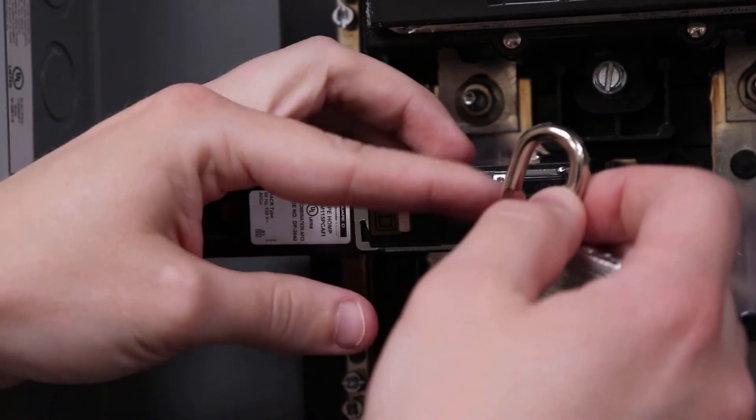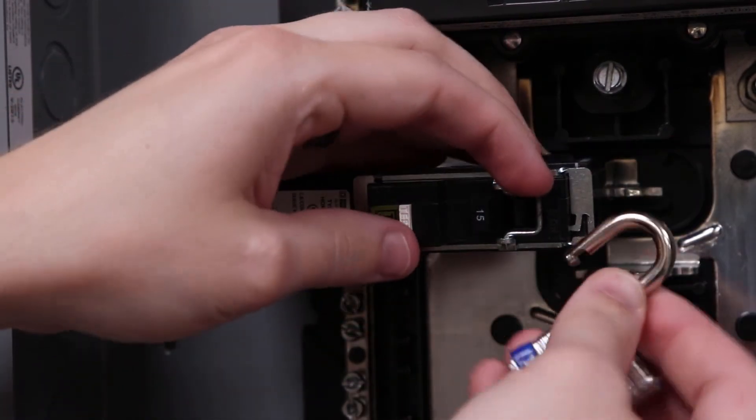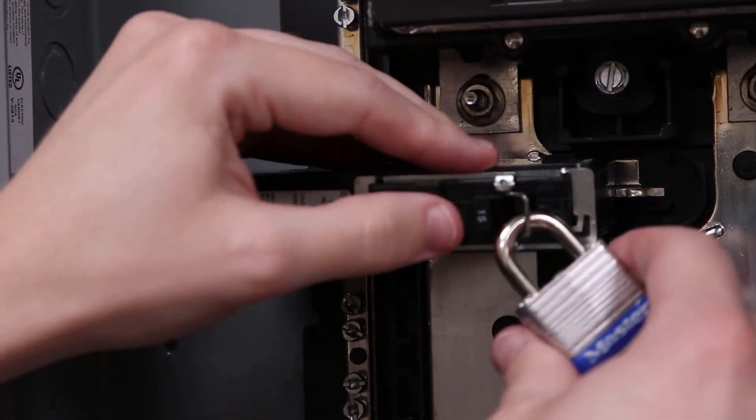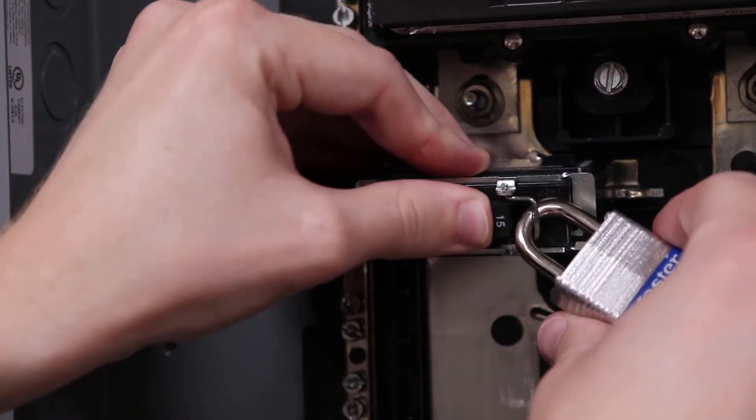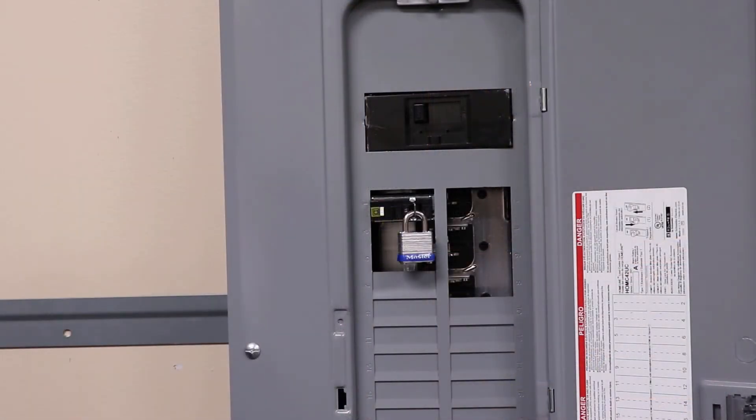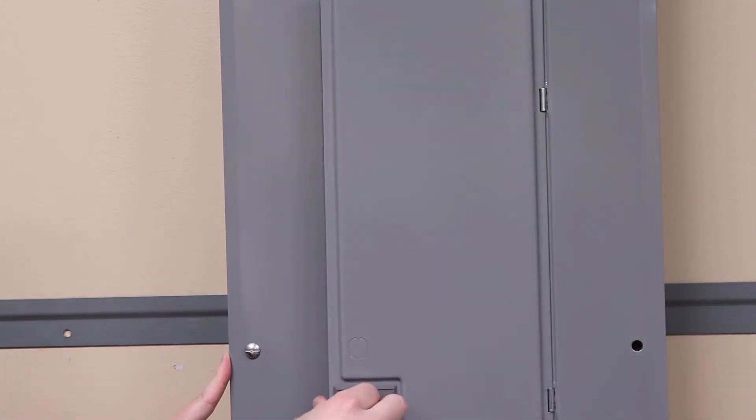You'll see that once the padlock is installed, the shaft of the padlock will prevent the breaker from being turned on. You'll see that now, even with the padlock installed, you can still close the cover door.